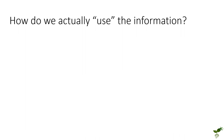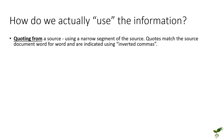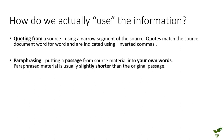Broadly speaking there are four main ways in which you can use information from a source. Firstly, you may be quoting from a source — this involves using a narrow segment of the source and using the exact words word for word, indicating this using inverted commas. You may also be paraphrasing part of a source, which involves putting a passage or a small excerpt of text into your own words. Paraphrased material is normally slightly shorter than the original passage, but the important thing is that it's in your own words.